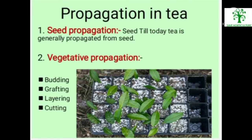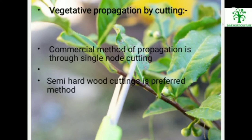Propagation in Tea. First, seed propagation: today tea is generally propagated from seed. Second, vegetative propagation: tea is propagated vegetatively by different methods like budding, grafting, layering, and cutting. The commercial method of propagation is through single node cutting. Semi-hardwood cutting is the preferred method.